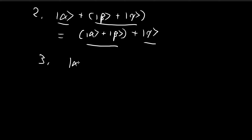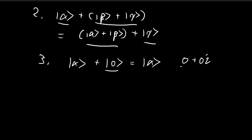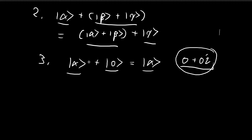The third axiom is that in your set there must exist a null vector such that adding it to any other vector does not change that vector. For complex numbers, the null vector is 0 + 0i, which is contained within the set of all complex numbers. So for complex numbers, this third axiom is satisfied.